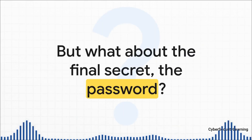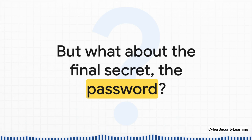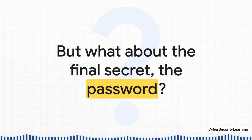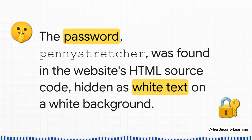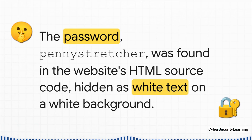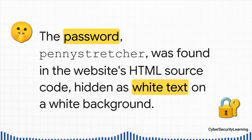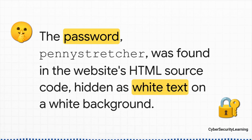We've got his email, we know where he lives, we probably know where he works, and we know he's on vacation. But what about the password? The answer was on his blog the whole time. It wasn't visible just by looking at the page, but if you view the page's source code — the raw HTML — you can see everything. He left himself a little note but tried to hide it by making the text white on a white background, so it's invisible. But a simple Ctrl-A to select all text on the page, and there it is. The password: PennyStretcher. Game over. A total compromise — and it all started from one single photo.